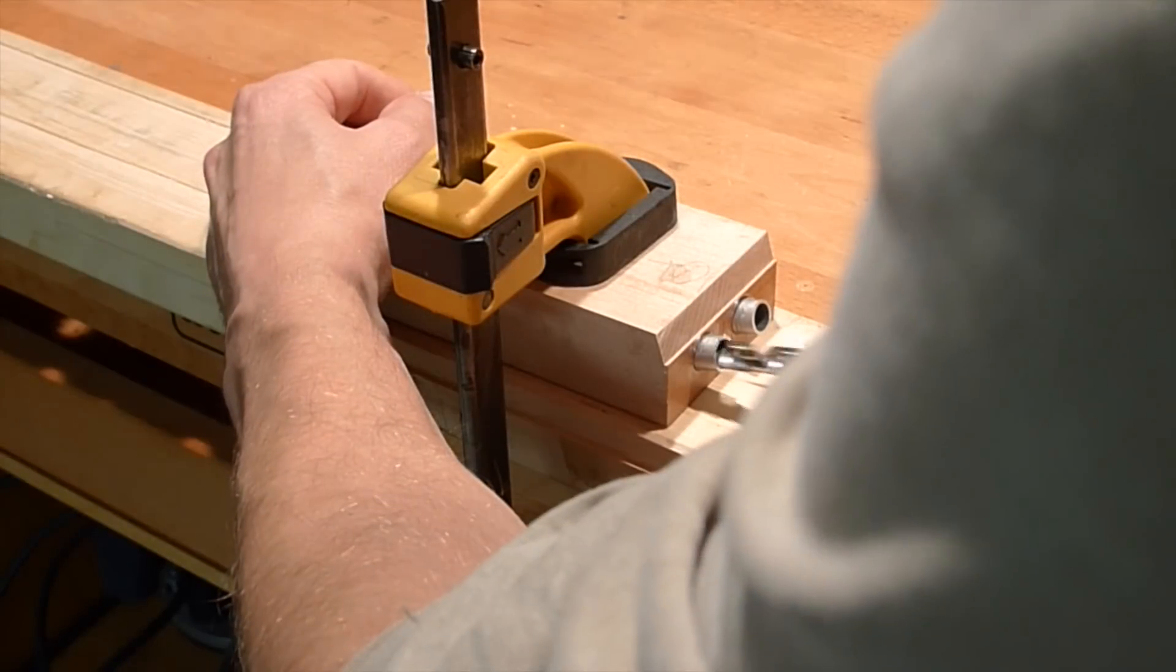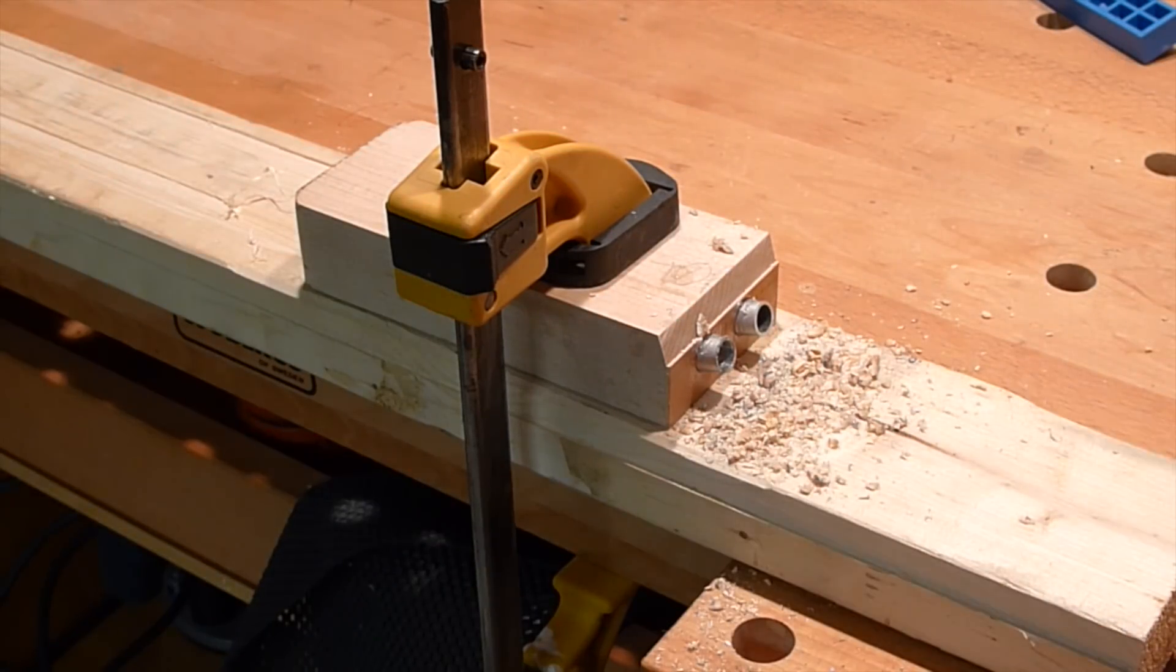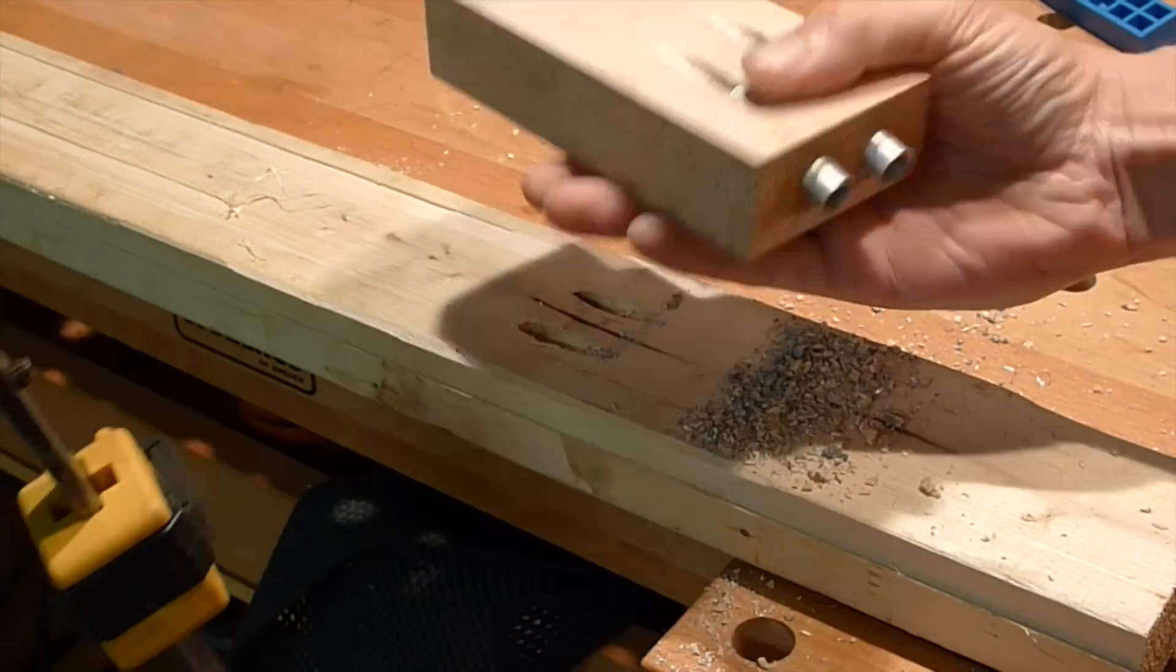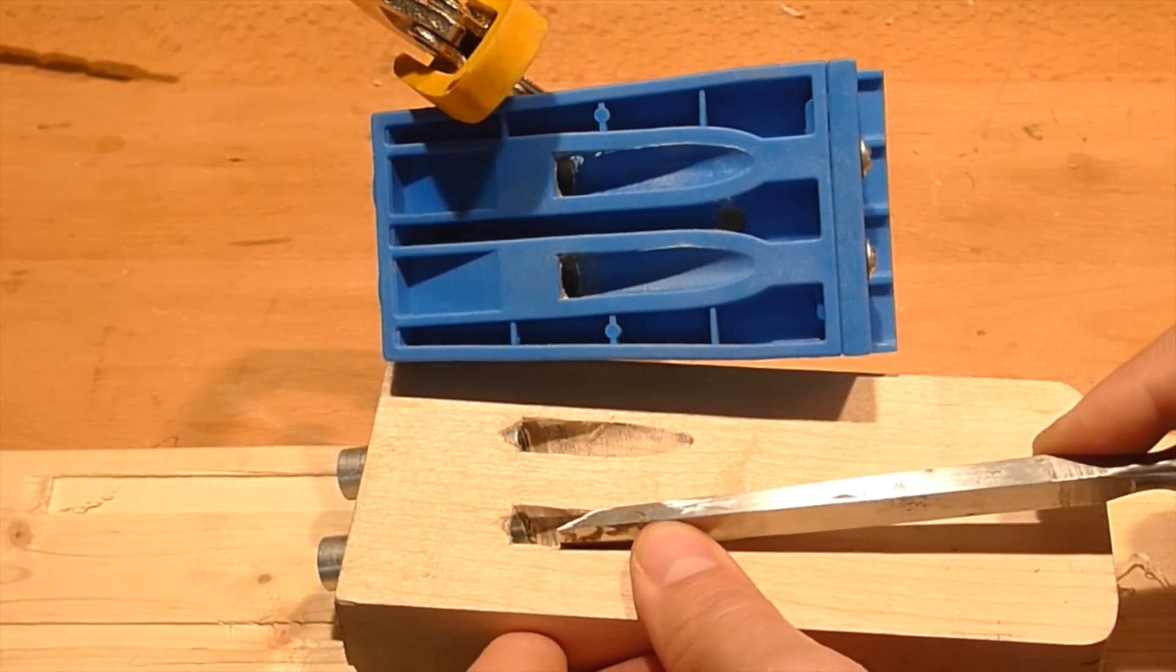And now I'm gonna make the first cuts that's gonna create those pockets inside of the jig. Using my chisel to make them square.